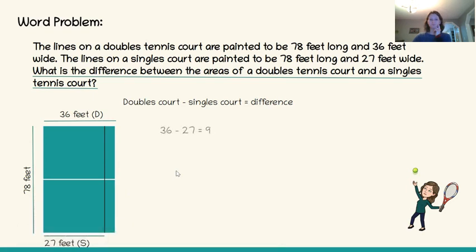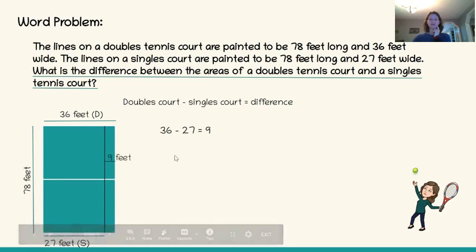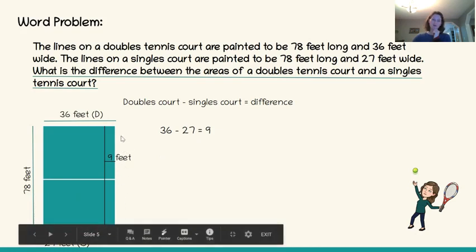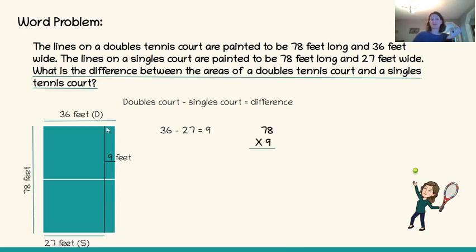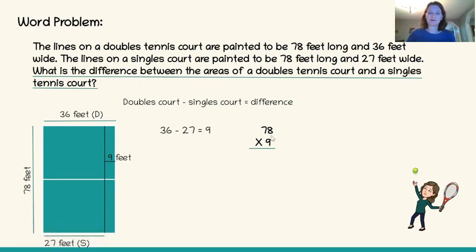I'm going to take the doubles court width and subtract the singles court width: 36 minus 27 is 9. So it's a 9-foot difference in width, and it's still 78 feet long because both courts are 78 feet. So I'm going to figure out what 78 times 9 is — that will give me the section of the court that is the difference between the doubles court and the singles. Using the shortcut method, we start with the ones: 9 times 8.